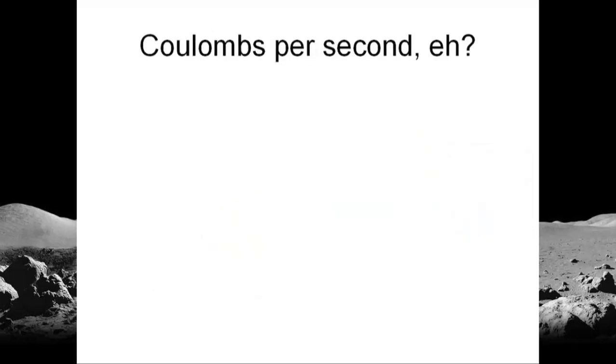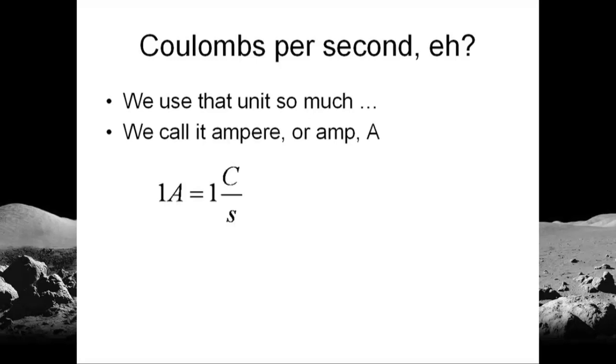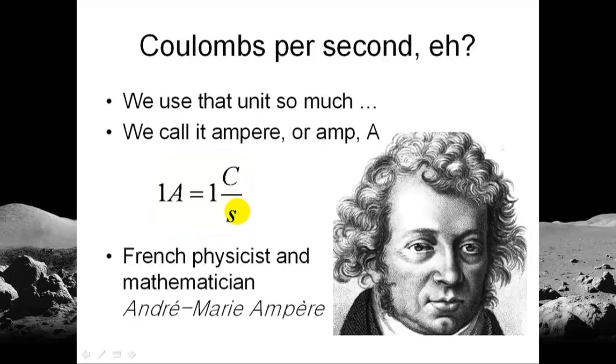That unit, coulombs per second, we use that so often that we gave it a name of its own. We call that the ampere or amp, represented with an uppercase A. A current of one amp is a current of one coulomb per second. That unit, the ampere, is to honor the French physicist and mathematician André-Marie Ampère. He is one of the founders of a field of physics known as classic electromagnetism.